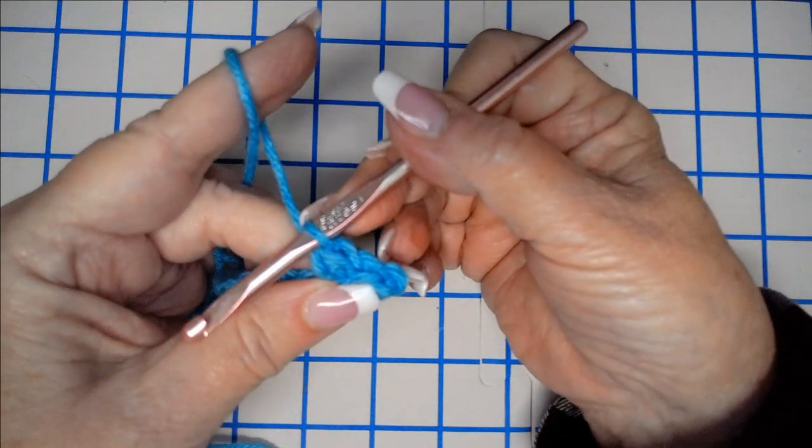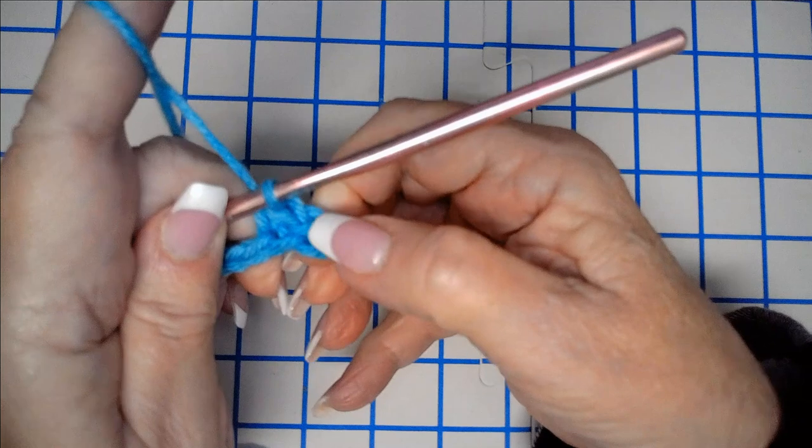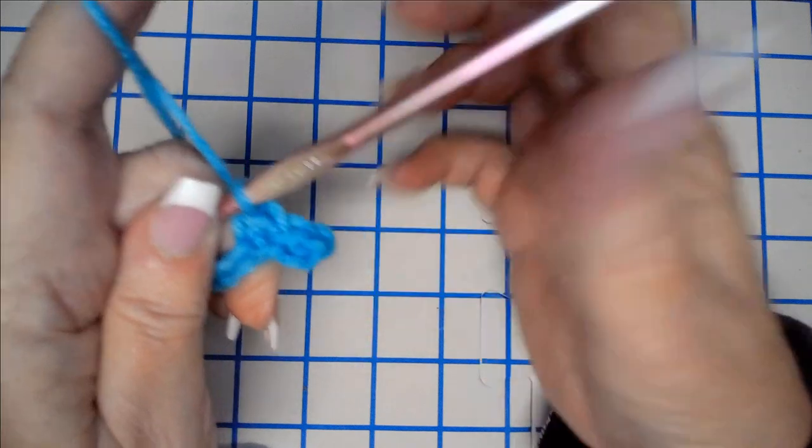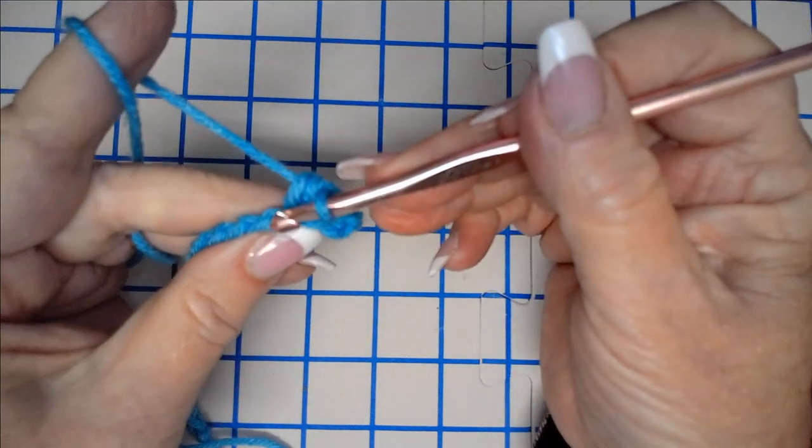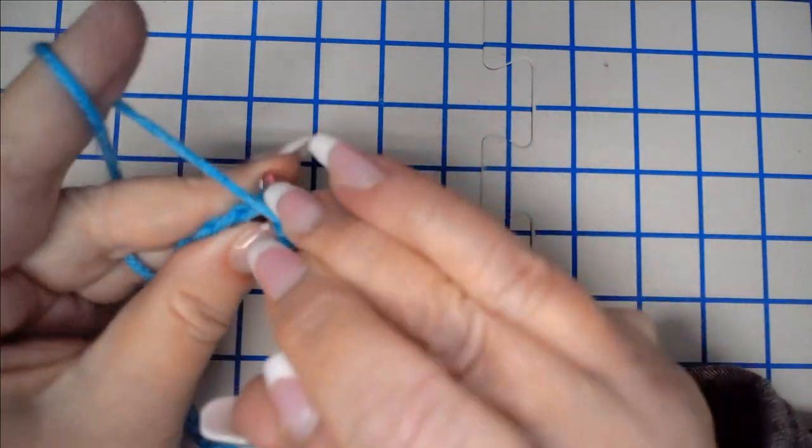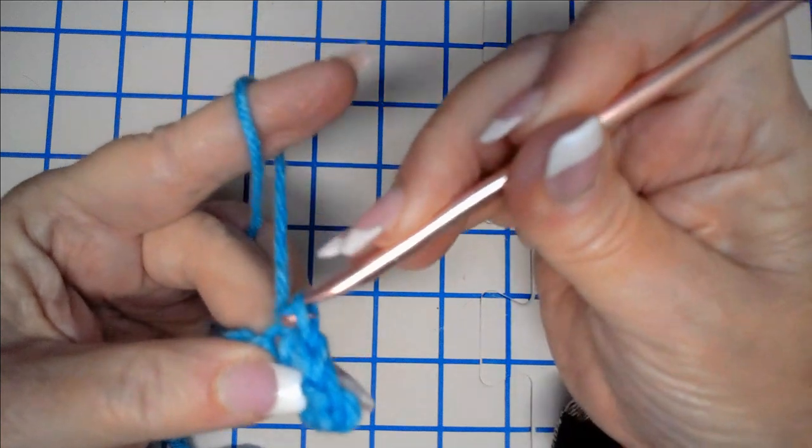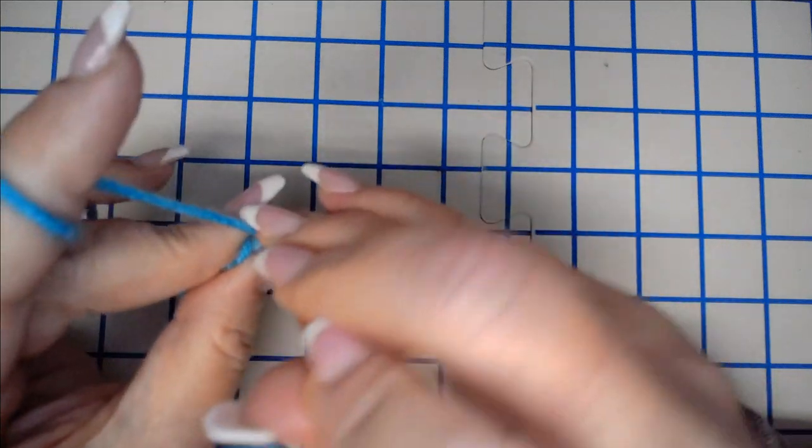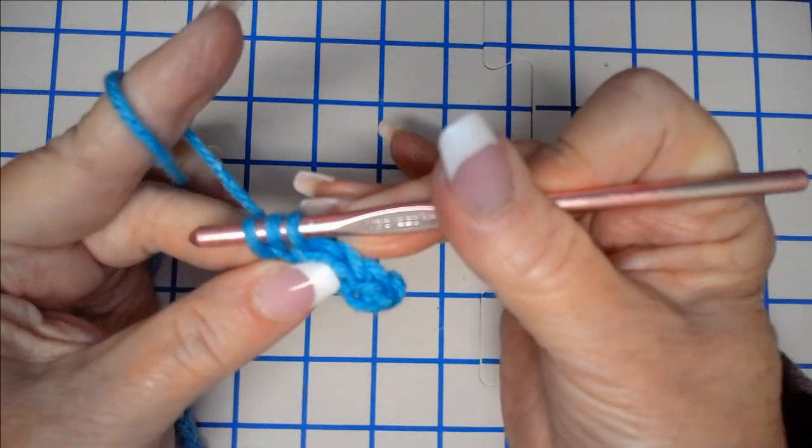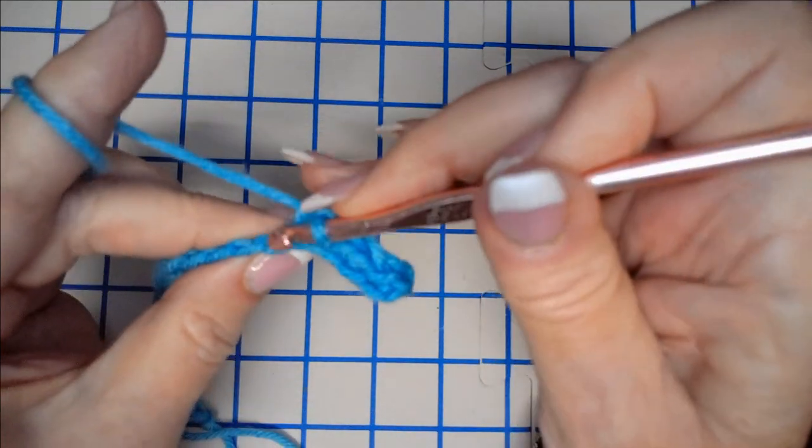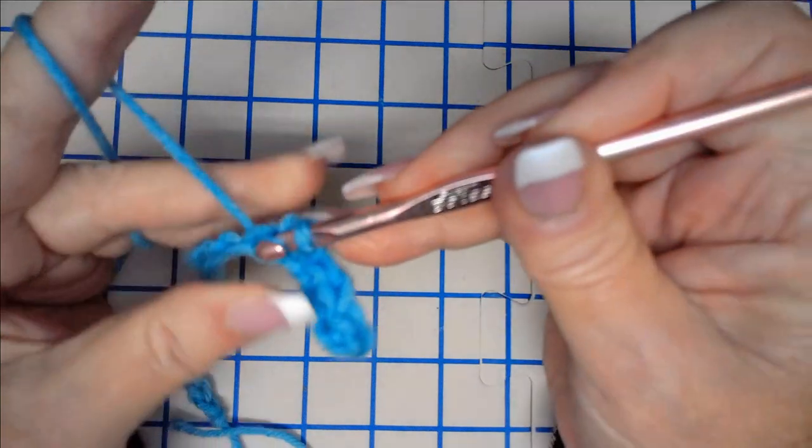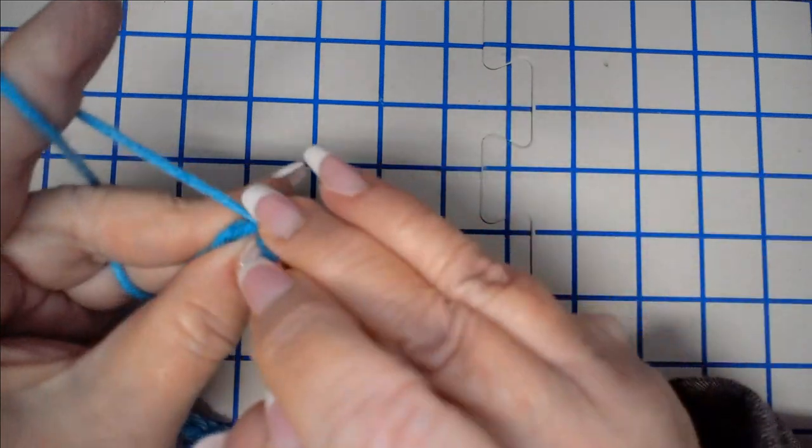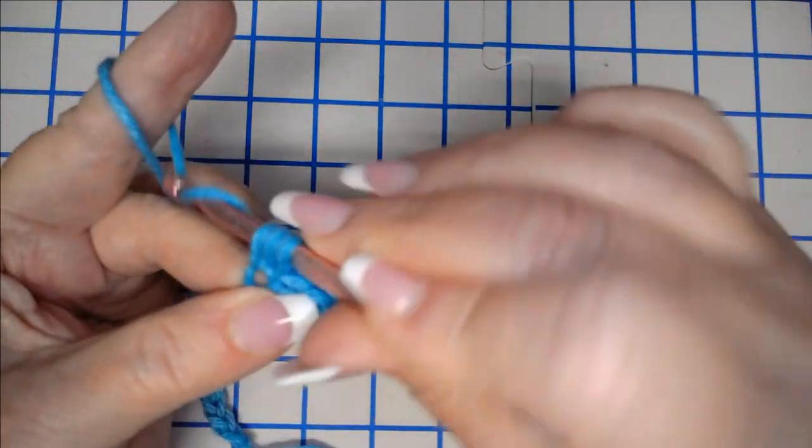And that is all there is to the sand stitch. You have a slip stitch, and then you have a half double crochet, one right after the other. So in this very next loop here, I'm going to put a slip stitch. Pull it up and then continue right on through that loop. Yarn over and make your half double crochet in the next chain. Slip stitch again, half double crochet. And that's all we're going to do all the way down the row.